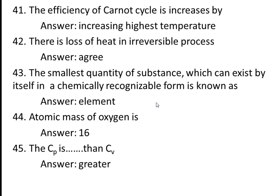Forty-third question: the smallest quantity of substance which can exist by itself in chemically recognizable form is known as an element. Forty-fourth question: the atomic mass of oxygen is 16. Atomic mass is the addition of masses of protons, electrons, and neutrons. Since the mass of an electron is very small, we generally don't take it into account.